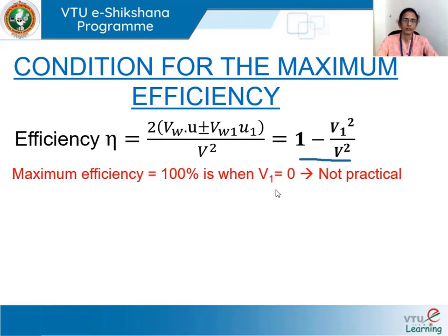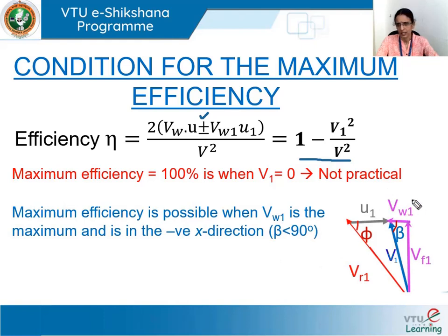The other condition for maximum efficiency comes from the expression 2(Vw·U ± Vw1·U1)/V². The plus sign gives maximum efficiency, so we should use the positive sign and Vw1 should also be maximum. This concerns the outlet velocity triangle: Vw1 should be in the negative x direction, which requires β < 90°. Since Vw1 is the tangential component of V1, its maximum value is V1 itself.